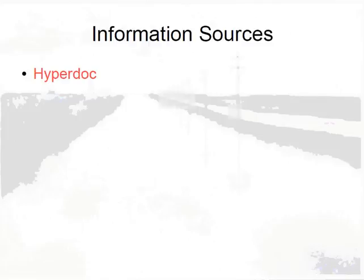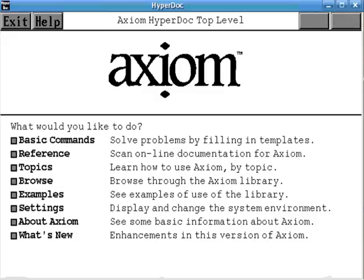There are also internal information sources available only when running Axiom. Work is in progress to significantly enhance these sources to make the system easier to use. Hyperdoc is the classic Axiom browser. By default, Hyperdoc starts when Axiom starts.